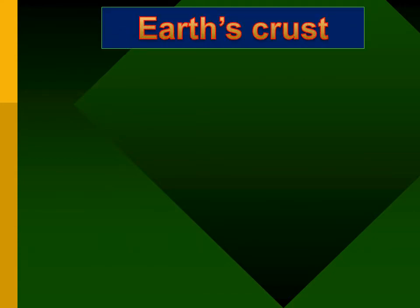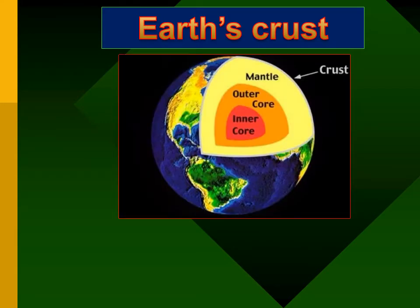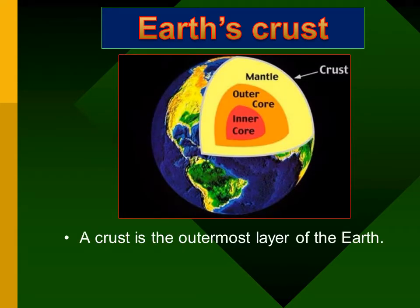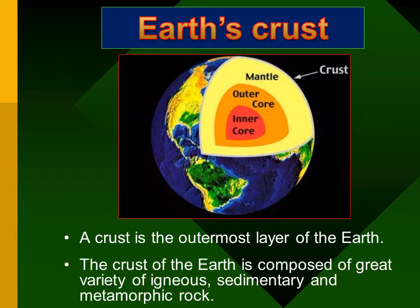First, we will discuss Earth's surface and Earth's crust. The outer surface of earth is a layer of rock called the crust. The crust is the outermost layer of earth and covers all of the earth. In places such as the ocean, the crust is underwater. The crust of the earth is composed of a great variety of igneous, sedimentary, and metamorphic rock.